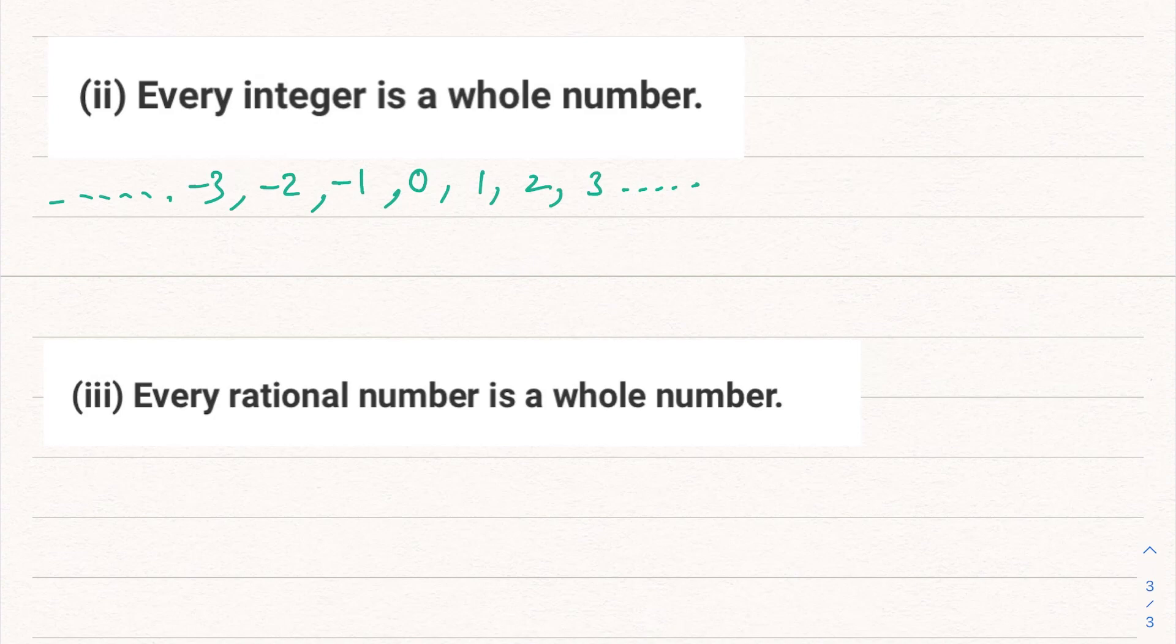And if we talk about whole numbers, those numbers are 0, 1, 2, 3 till infinity. So can we say that every integer is a whole number? Here it is clearly visible—these negative integers are definitely not whole numbers. So this particular statement is a false statement.